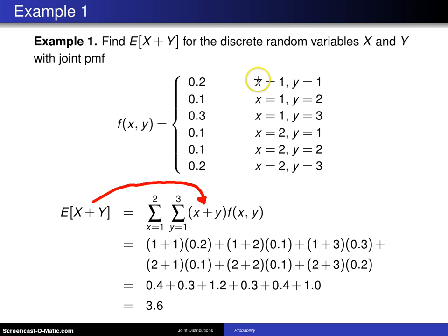One plus one, that's this out here, multiplied by 0.2, and then we get one plus two multiplied by 0.1, one plus three multiplied by 0.3, and then two plus one multiplied by 0.1, et cetera.